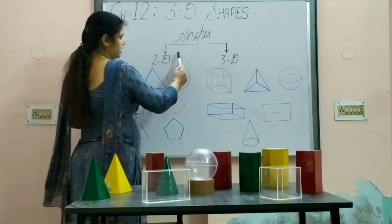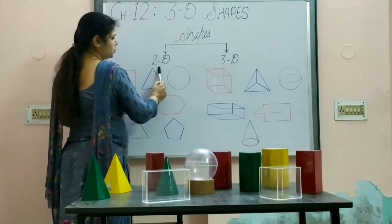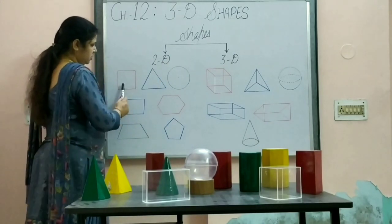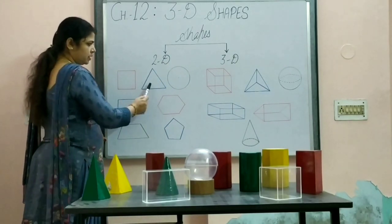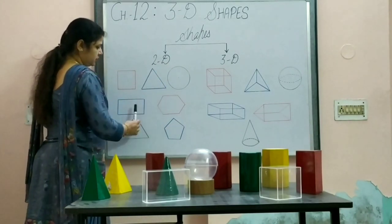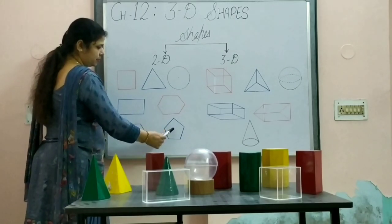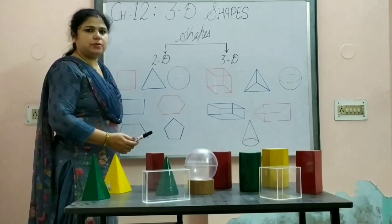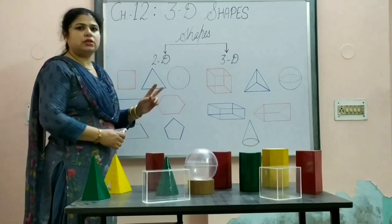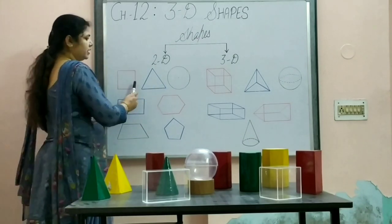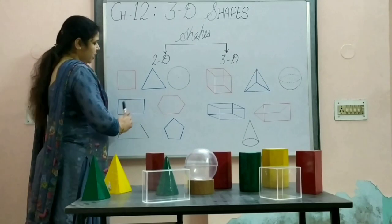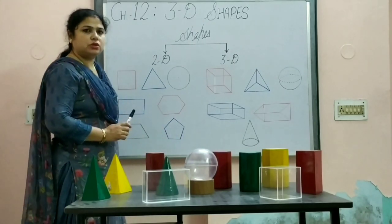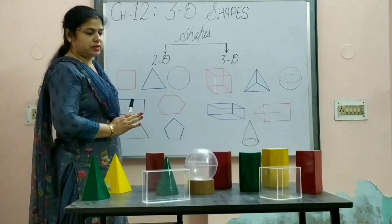So here as you can see, which are 2D shapes: square, triangle, circle, rectangle, hexagonal, pentagonal, trapezium, and there are many more shapes which are 2D which have only length and breadth. And one more thing — all these flat shapes can be drawn on a flat surface.